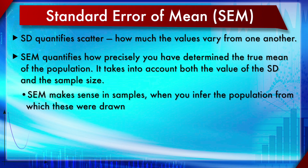Standard Error of the Mean quantifies how precisely you have determined the true mean of the population. The population mean is something entirely different from the sample mean — the sample mean might not be the same as the population mean. There might be a margin of error, and that error is what is captured by the Standard Error of the Mean.